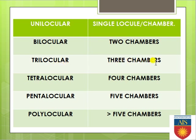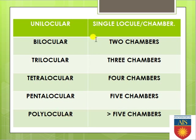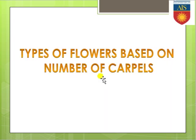If there are three chambers it is trilocular, four chambers is tetralocular, more than four chambers is pentalocular, and if more than five chambers are present, the ovary is known as polylocular. Based on the number of locules or chambers, the ovary is classified into these six different types.